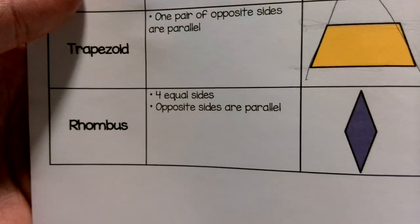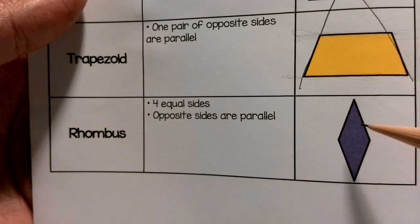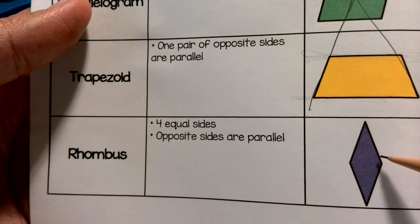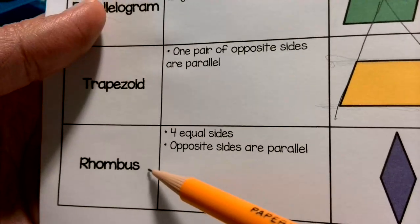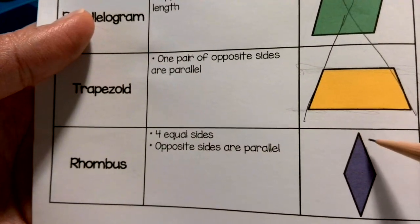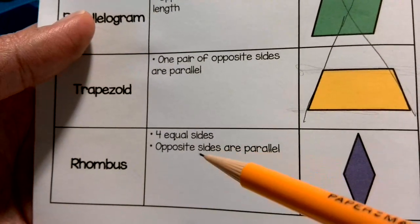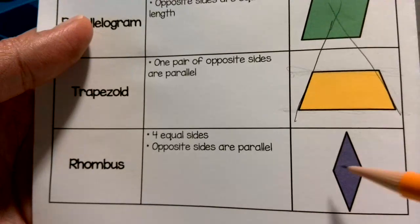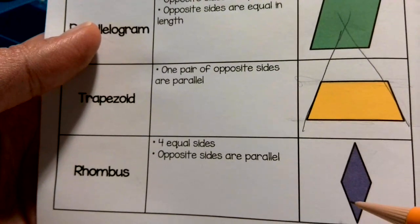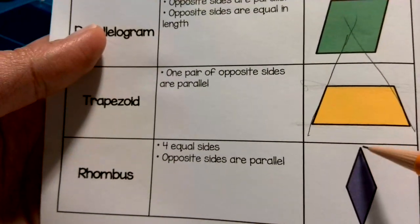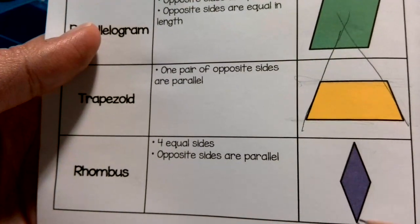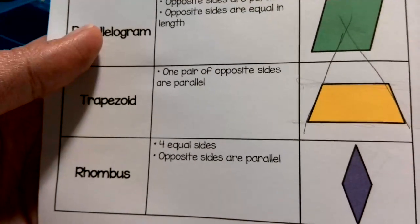Our last quadrilateral is a rhombus. When I was a little girl we called this a diamond, and you might also hear it described as a kite, but rhombus is the word we're looking for in third grade. Just like the square, it has four equal sides. All the opposite pairs of sides are parallel — this line and its opposite will never cross. There are two pairs of parallel lines, and each side is the exact same length as its opposite pair.